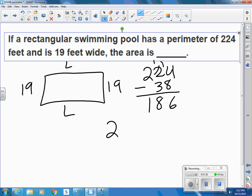So 2 lengths equals 186, so the length is equal to 93 feet.